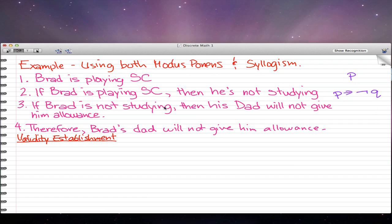Now if Brad is not studying, so that is not Q, then his dad will not give him allowance. If his dad gives him allowance, we'll call that R. So not give him allowance, that would be not R, the negation symbol R.